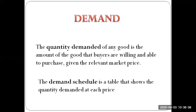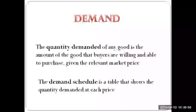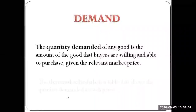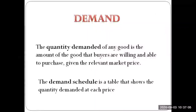Demand is essentially a set of all the relevant price points available in the market and the quantities I demand at each. The demand schedule is what represents this — it is a table that shows the quantity demanded at each price. Given every market price available, it shows a particular quantity demanded that represents my entire preference or demand pattern.